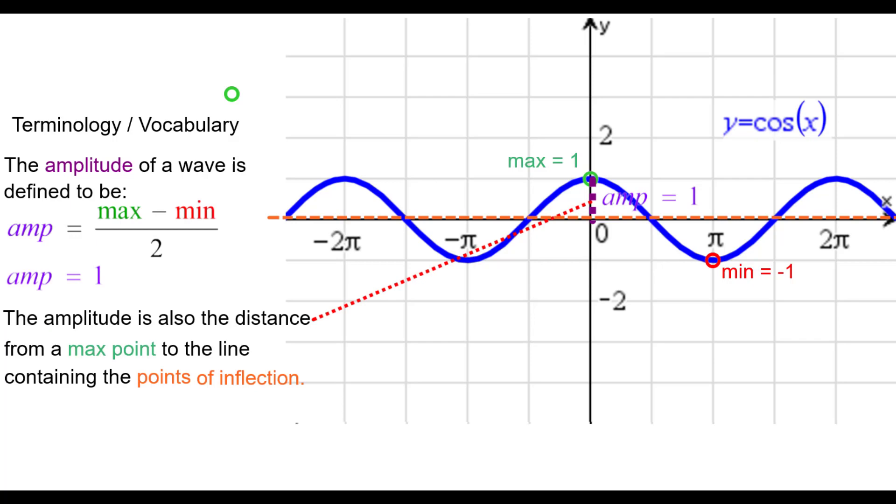The amplitude is also the distance from a max point to the line containing the points of inflection. So that's 1. And it's also from the minimum to the line containing the points of inflection, that distance there, which is 1.